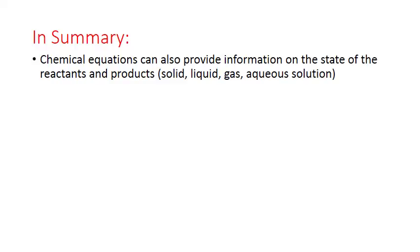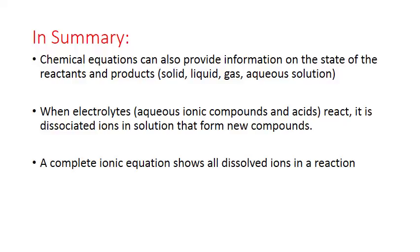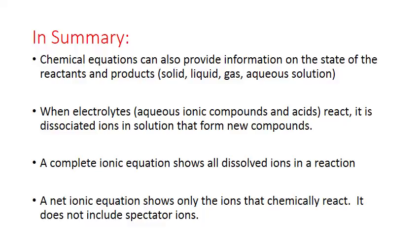In summary, chemical equations can provide information on the state of reactants and products — whether substances are solids, liquids, gases, or aqueous solutions (dissolved in water). When electrolytes, which are aqueous ionic compounds and acids, react, it is the dissociated ions in solution that actually form new compounds. A complete ionic equation shows all dissolved ions in a reaction between electrolytes, while a net ionic equation shows only the ions that chemically react, excluding spectator ions.